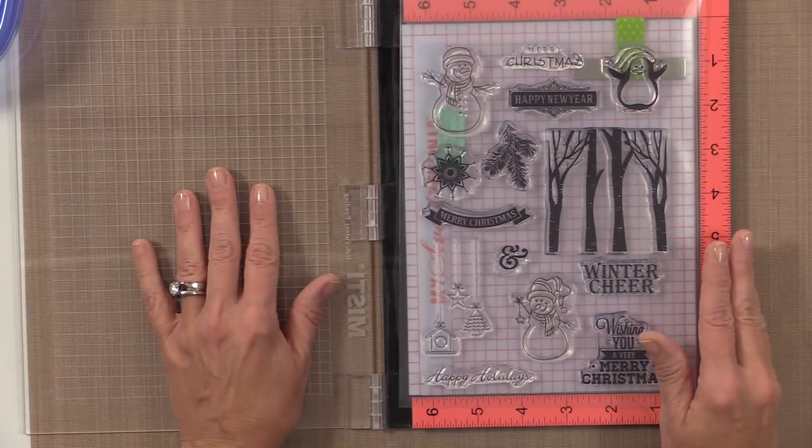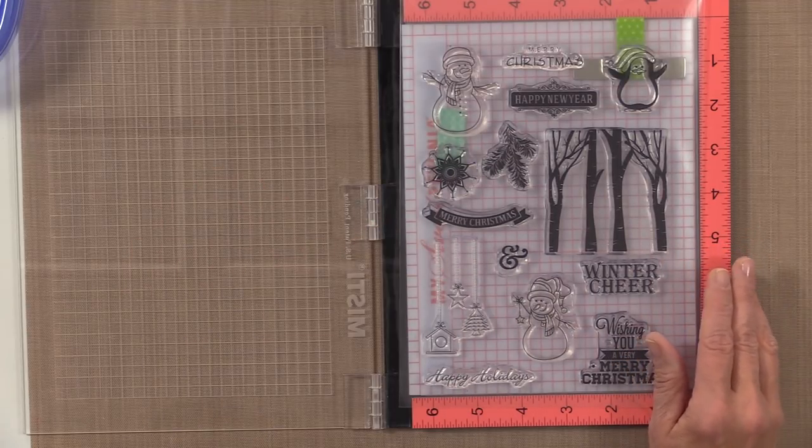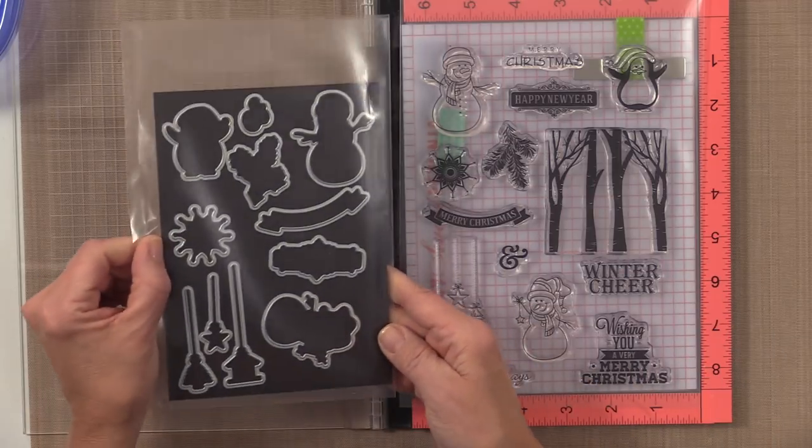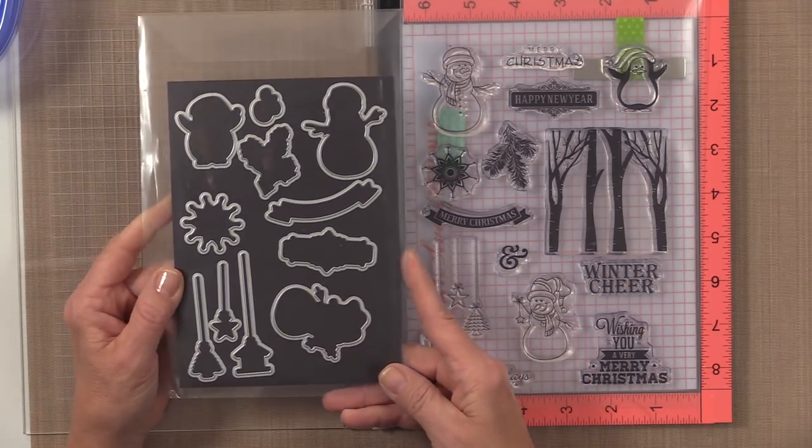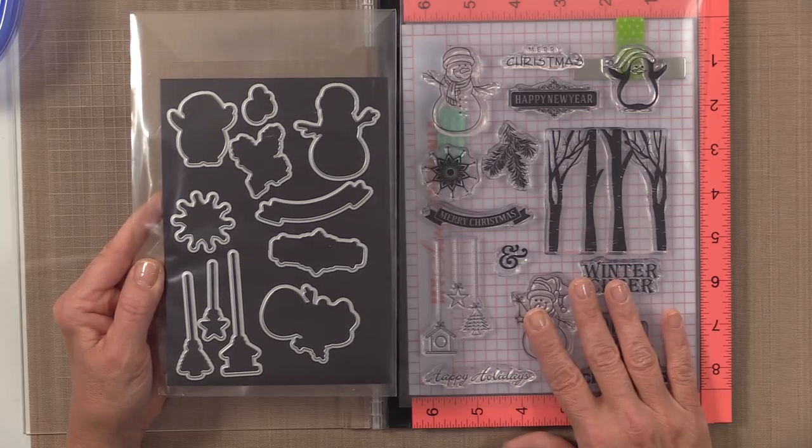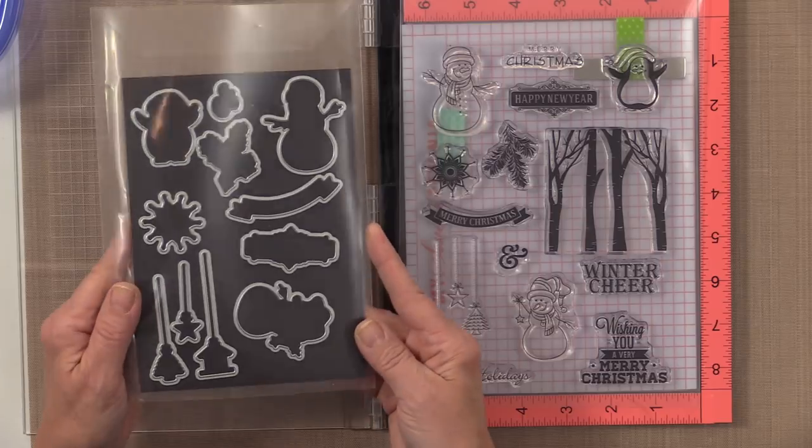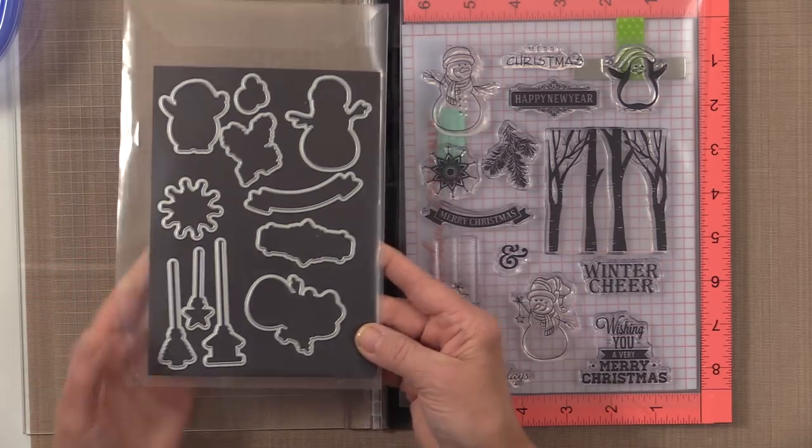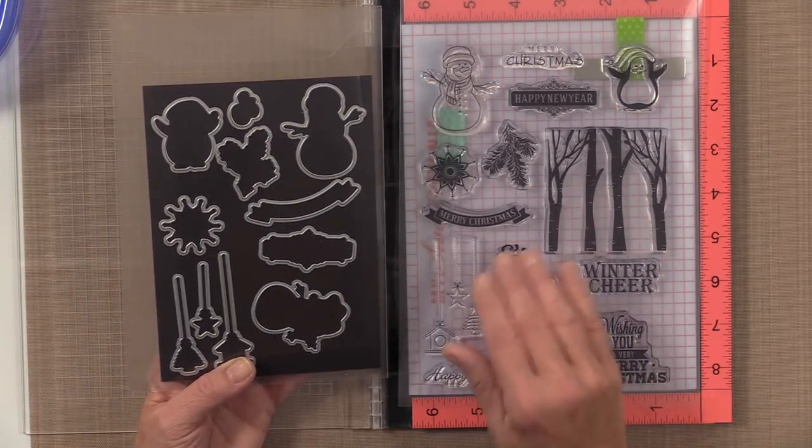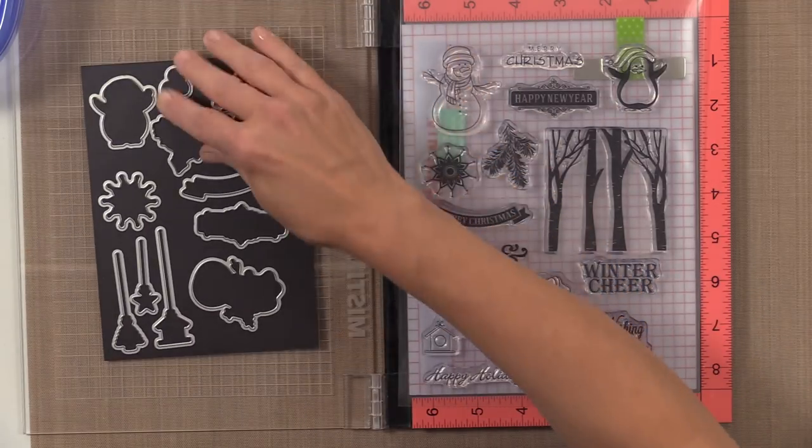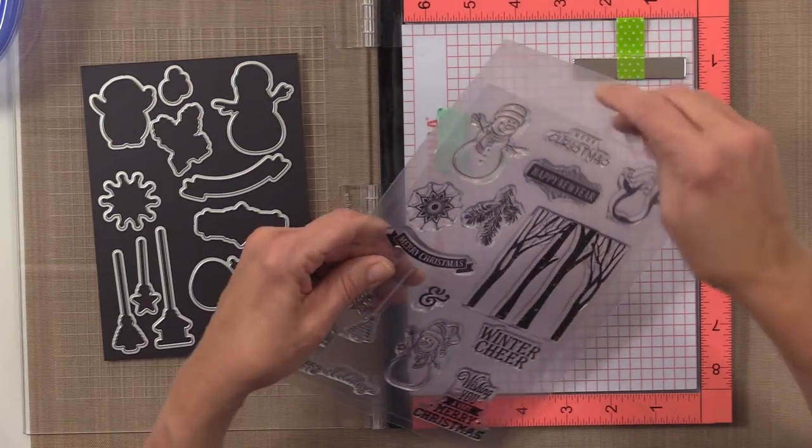What we did this year, and maybe some of you don't even know this, is we have added dies into our store for many of our past holiday sets. So if you have any older Gina K Designs Stamp TV kits that didn't have dies, check our store. We added about six or seven brand new die sets that coordinate with Christmas sets from the past.